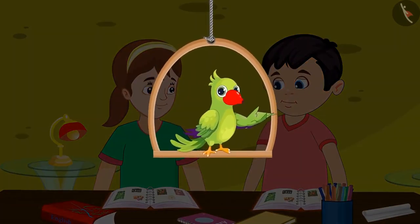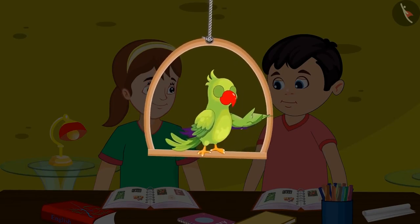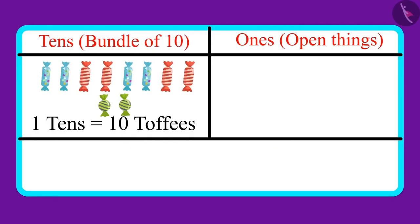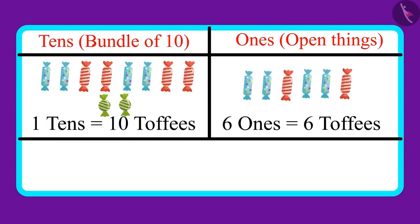Children, have you also understood this topic properly? Come on, let's see. These are some toffees. There are one tens and six ones in the number. Can you tell me how many toffees are there in all?